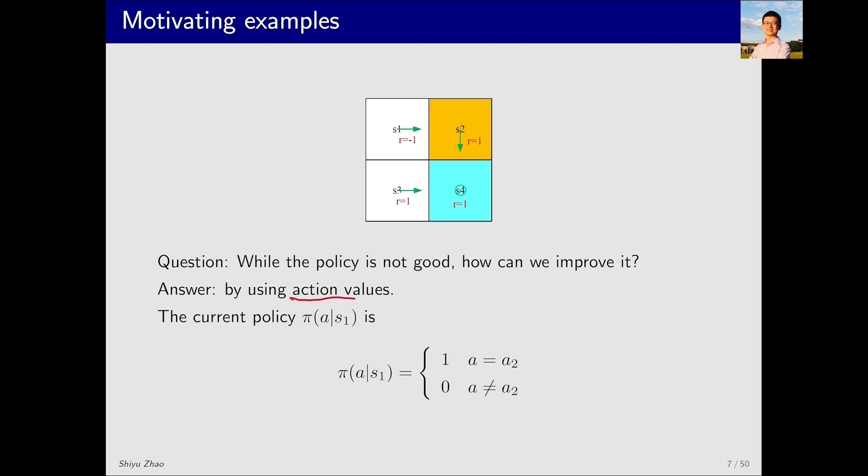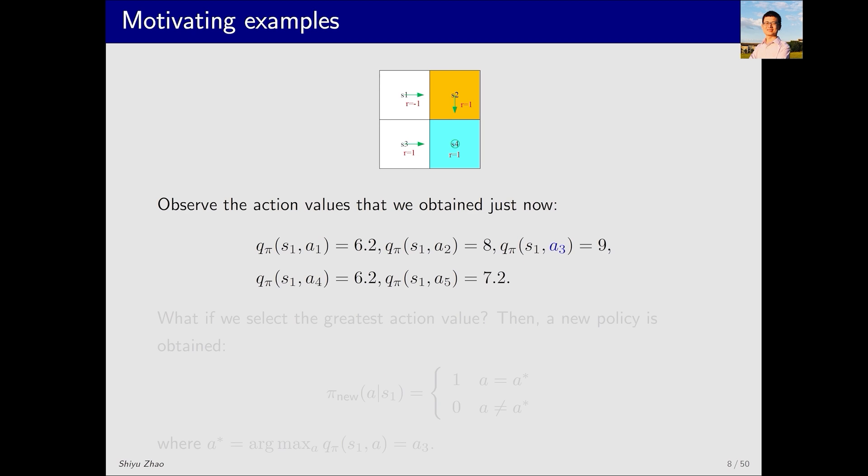The answer lies in action value. Let's look at the current policy, which can be expressed like this. When a equals a2, moving right, its probability is 1, and for all other actions it's 0. Under this policy, we've calculated action values and discovered that a3 corresponds to the highest action value. Could we choose a3 as a new policy?